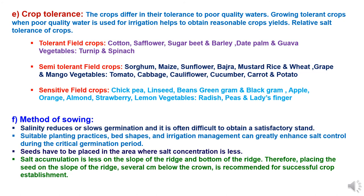Fifth method is growing tolerant crops. The crops differ in their tolerance to poor quality waters, and growing tolerant crops when poor quality water is used helps to obtain reasonable crop yields. There are three types on the basis of tolerance: tolerant crops — cotton, safflower, sugar beet, barley, date palm, guava, turnip and spinach; semi-tolerant crops — sorghum, maize, sunflower, bajra, mustard, rice, wheat, grape, mango, tomato, cabbage, cauliflower, cucumber, carrot and potato; and sensitive crops — chickpea, linseed, beans, green gram, black gram, apple, orange, almond, strawberry, lemon, and vegetables like radish, peas and lettuce.